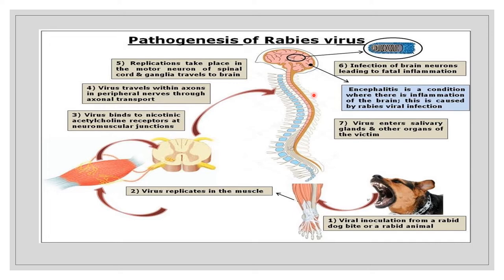The pathological hallmark of rabies in the brain is Negri bodies — intracytoplasmic eosinophilic inclusions found in the brain parenchyma, mainly in the pyramidal neurons of the hippocampus and Purkinje cells of the cerebellum. Negri bodies are the most important pathological finding of rabies.